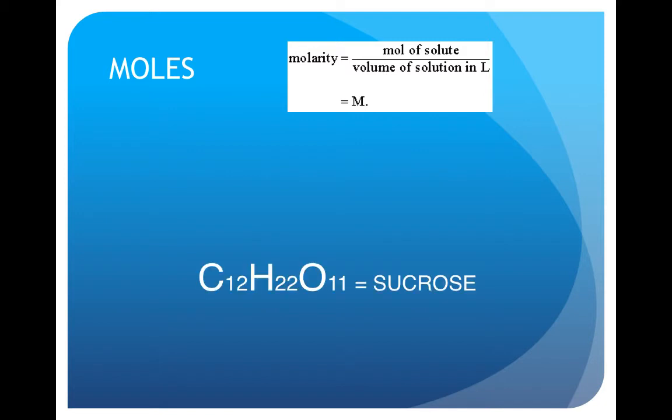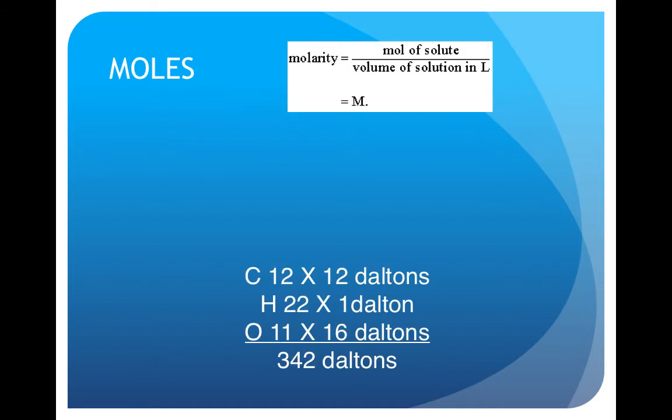If we take sucrose, which is common table sugar, its formula is C12H22O11. The 12 carbons have an atomic weight of 12 Daltons, so we multiply 12 times 12. The 22 hydrogens have an atomic weight of 1 Dalton. And the oxygen has an atomic weight of 16 Daltons, so we multiply 16 by the 11 oxygens. If we add all those up, we get 342 Daltons.